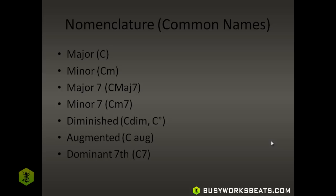When you read a major 7 chord, you're going to see C MAJ7. The upgrade from minor is a minor 7 chord; the notation is simply Cm7 — a little m and a 7. Notice how for major 7 you have to spell out MAJ, instead of just the letter. For diminished chords, you'll see C dim or C with a degree symbol. For augmented, you'll see C aug. For a dominant 7th chord, you'll see C7. Notice that C7 is not C major 7 — you need MAJ in between to show major 7, otherwise it means dominant 7th, which is a different chord.